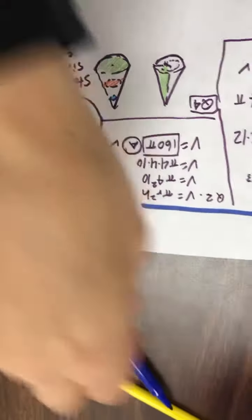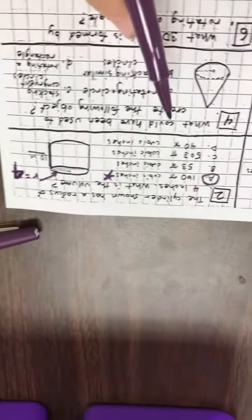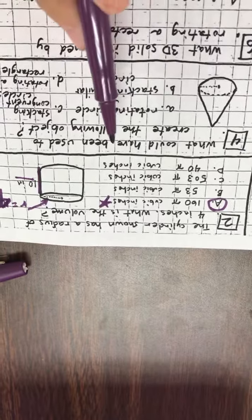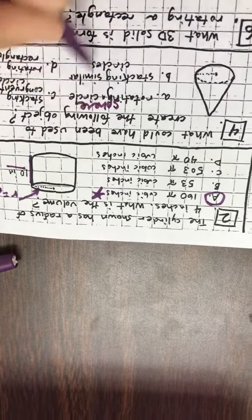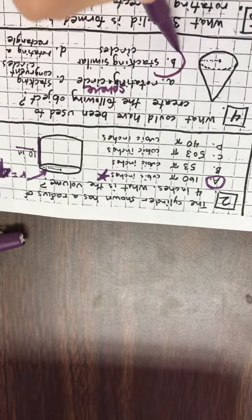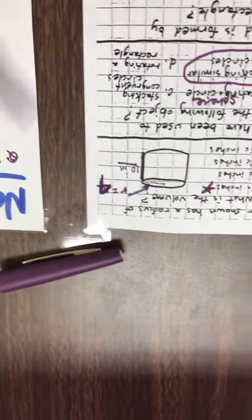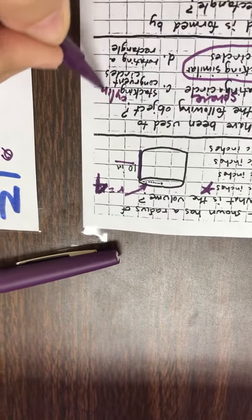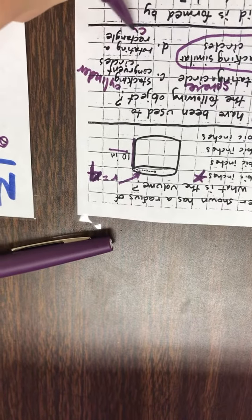So let's compare that with our answer choices. So question four says, rotating a circle. Well, no, a circle would create a sphere. Stacking similar circles. I like this. Stacking similar circles. Stacking congruent circles would make a cylinder. Rotating a rectangle would also give me a cylinder.